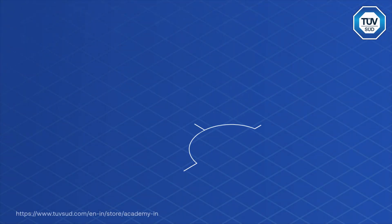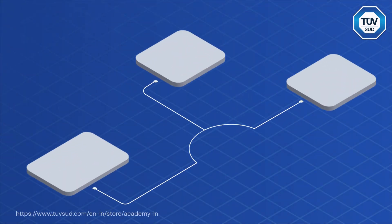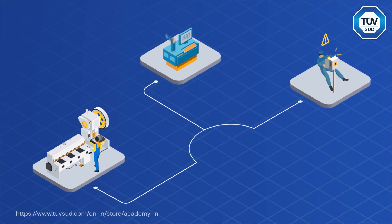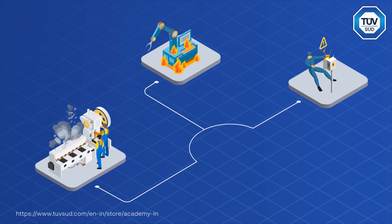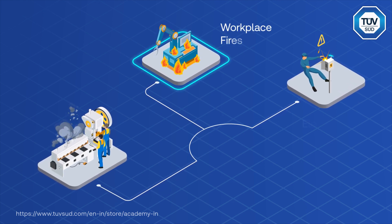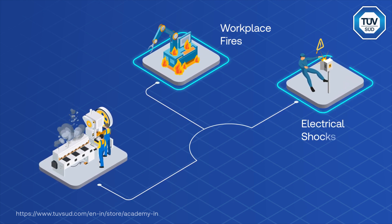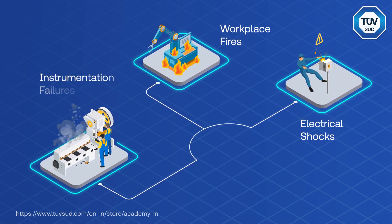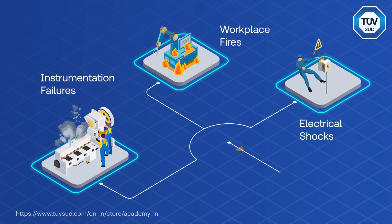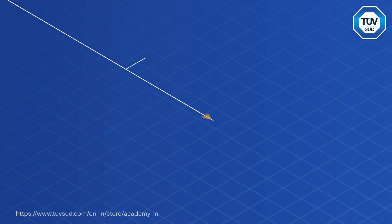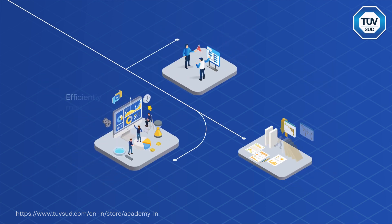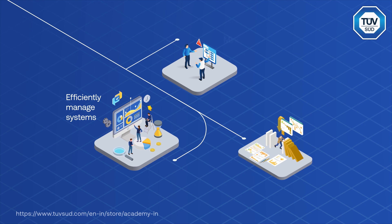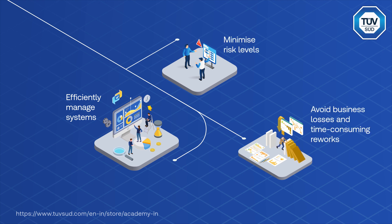Effective process functional safety can help enterprises of all sizes mitigate failures in electrical and electronic systems, like workplace fires, shocks, and instrumentation failures. The IEC standard specifies safety norms to help minimize failure risks, avoiding business losses and time-consuming reworks.